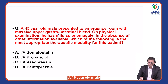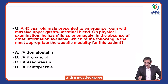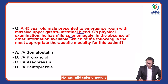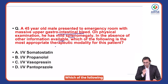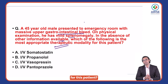A 45-year-old male presented to the emergency room with massive upper GI bleed. On physical examination, he has mild splenomegaly. In the absence of other information available, which of the following is the most appropriate therapeutic modality for this patient?